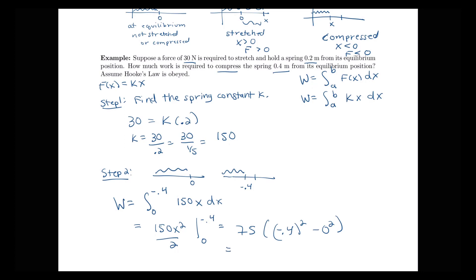So computing this, we have 75 times, let's see, negative 0.4 squared. 0.4 is 4 tenths or 2 fifths. When I square that, that's going to end up being 4 over 25. So we see we're going to end up with 12 joules of work for our final answer.